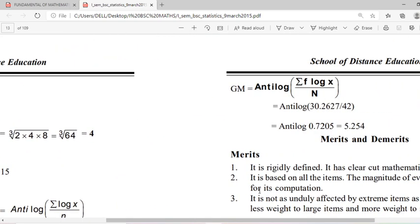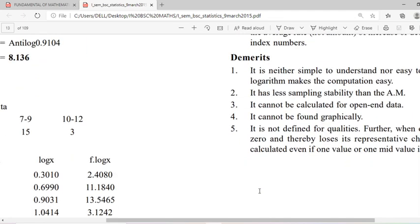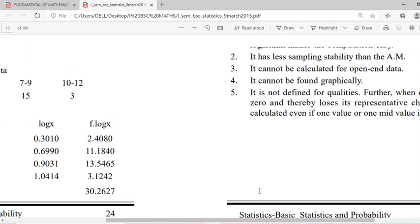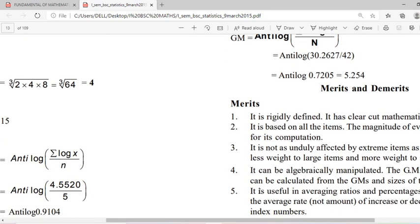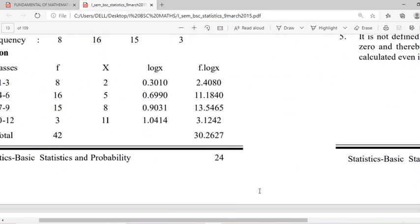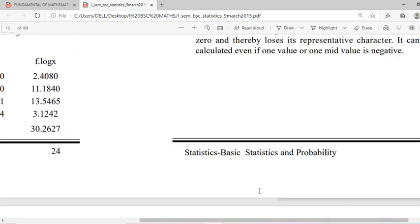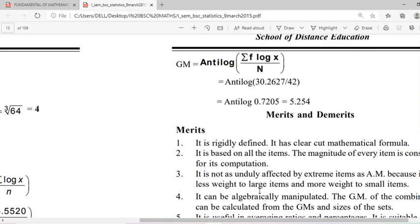For that we have to compute fi log xi values. Just multiply the f column with the log x column, that will result in this log x column. Take the total and then apply the formula. Geometric mean is equal to antilog of summation fi log x by capital N. Substitute the given observed results. Summation fi log x total is 30.2627, capital N is 42, divided with 42, we have taken log and antilog, so that is 5.254.